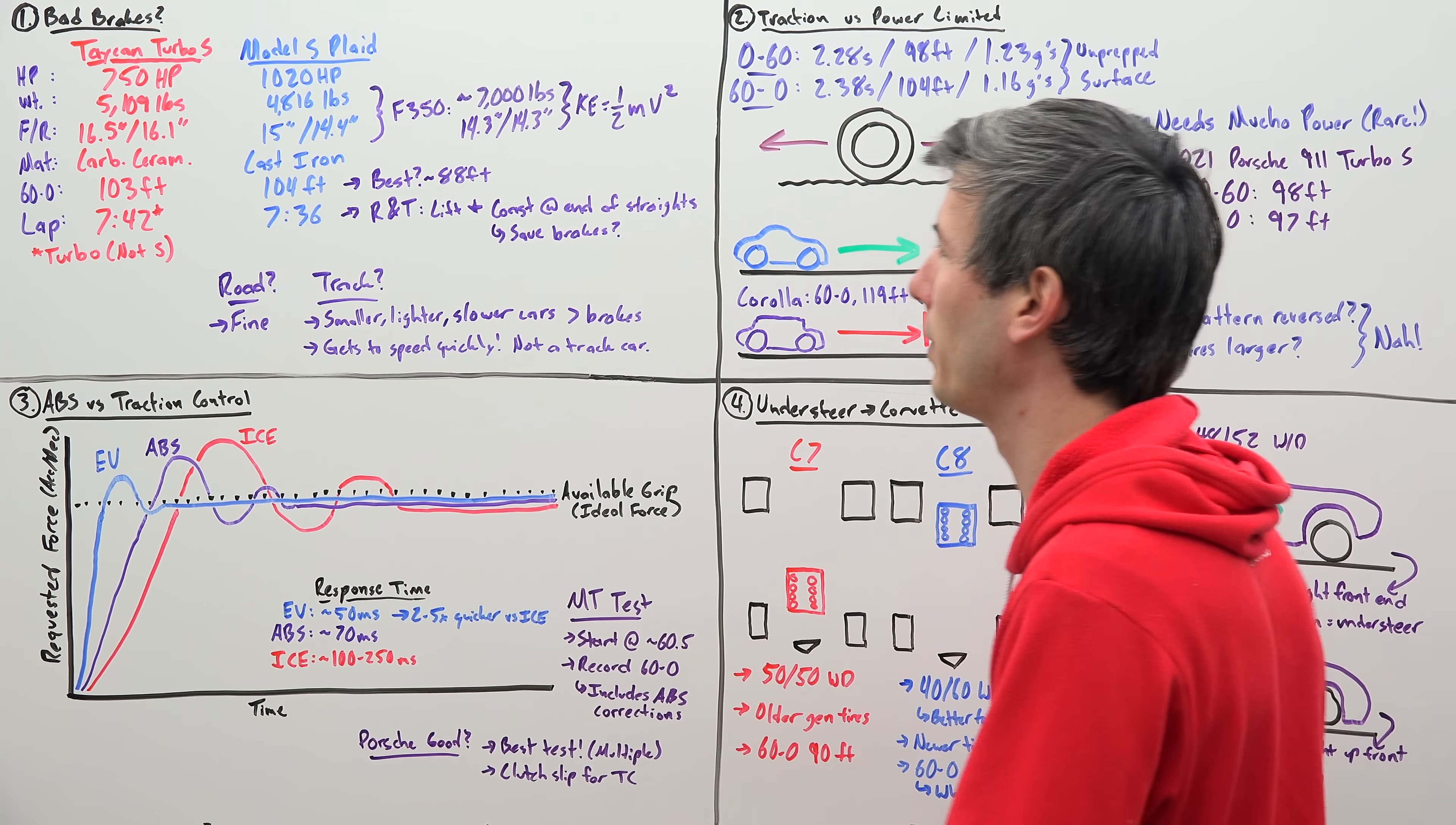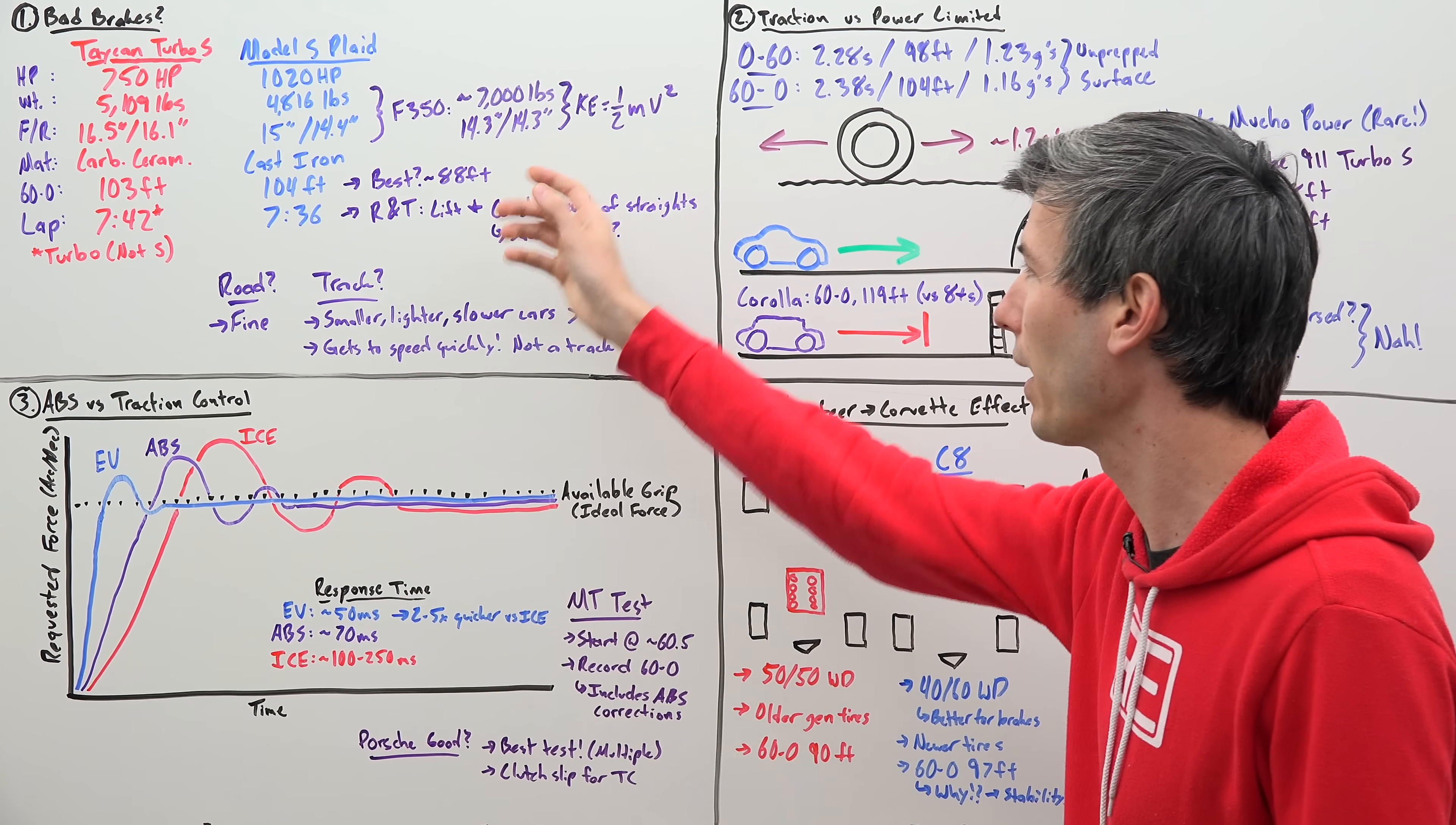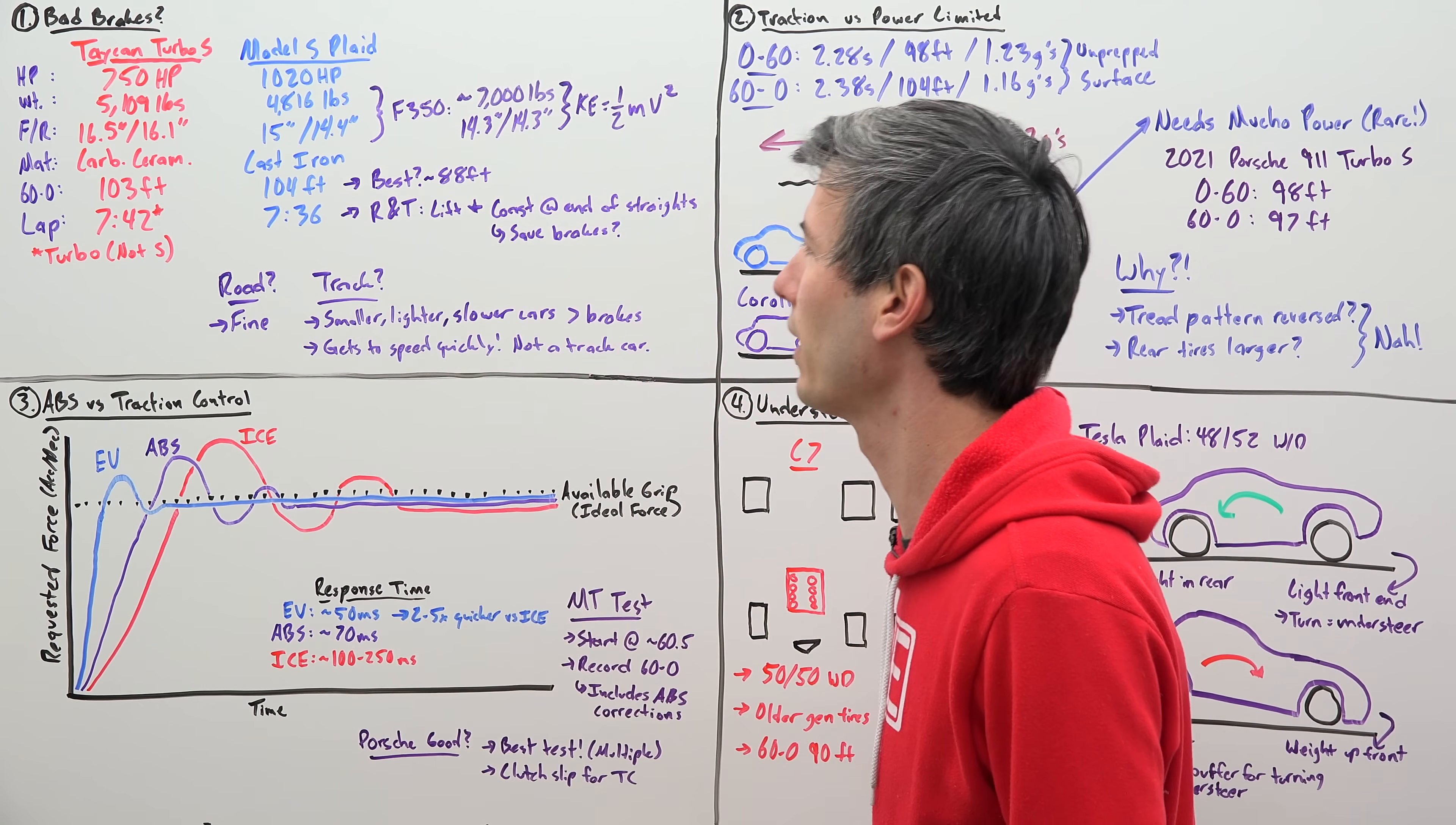Now what about braking performance? Well 60 to 0 on the Taycan Turbo S takes 103 feet, 104 feet for the Plaid. So on the road, pretty much identical stopping distances. These brakes are fine. 104 feet is good, it's not a bad number. The best production cars are getting around 88 feet. That's using better tires and they're lighter cars. So considering that we're 104 feet, pretty good braking for the road. Nothing to look at and be like oh that's embarrassing. Great brakes for the road.